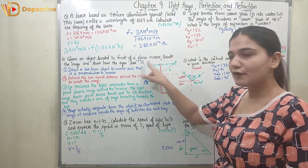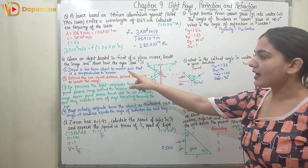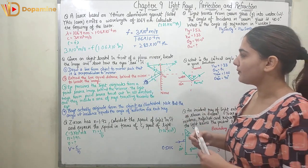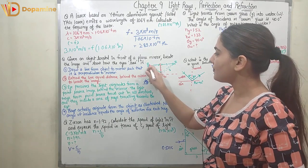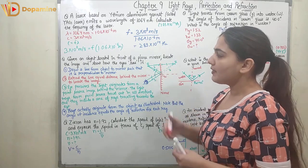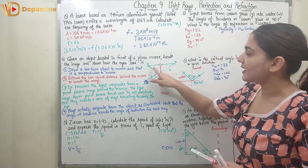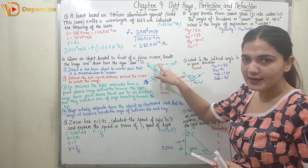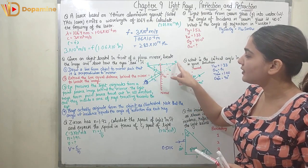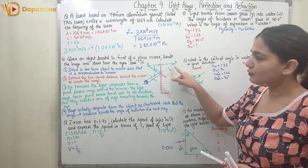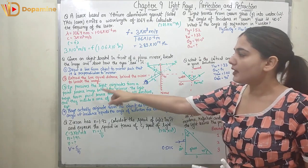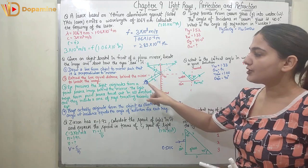First, we draw a line from the object to the mirror such that it is perpendicular to the mirror. We then extend this perpendicular line an equal distance behind the mirror so as to locate the image. The image is at equal distance behind the mirror.